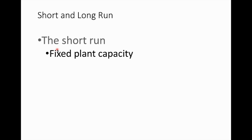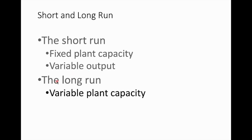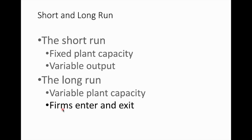In the short run, our plants and machines are considered fixed inputs, while workers and raw materials are examples of variable inputs. In the long run, all inputs including the factory, plant, and machines are all variable inputs. In both the short run and the long run, we assume a competitive labor market and a competitive product market where firms freely enter and exit.